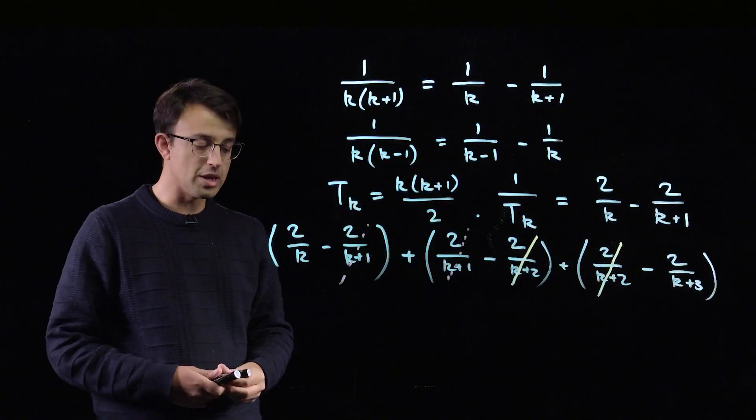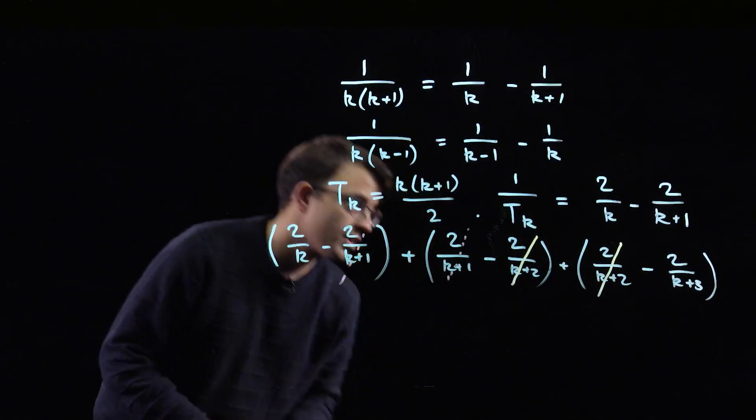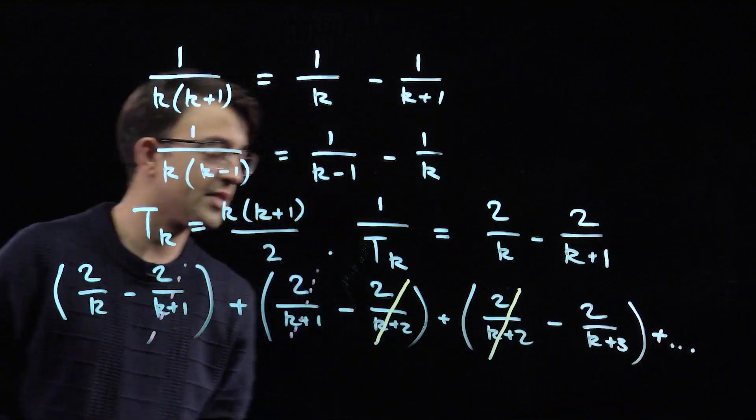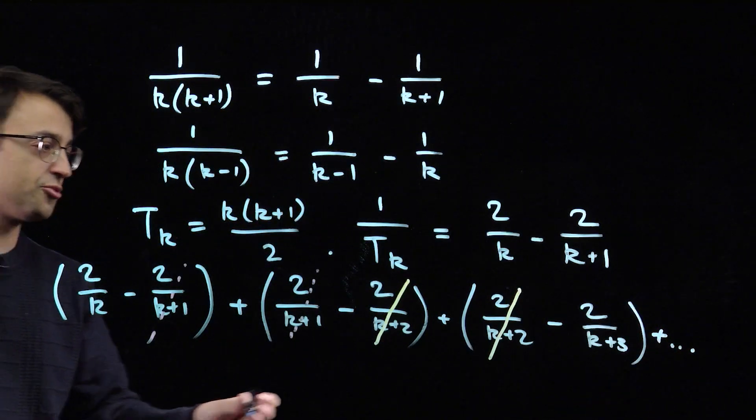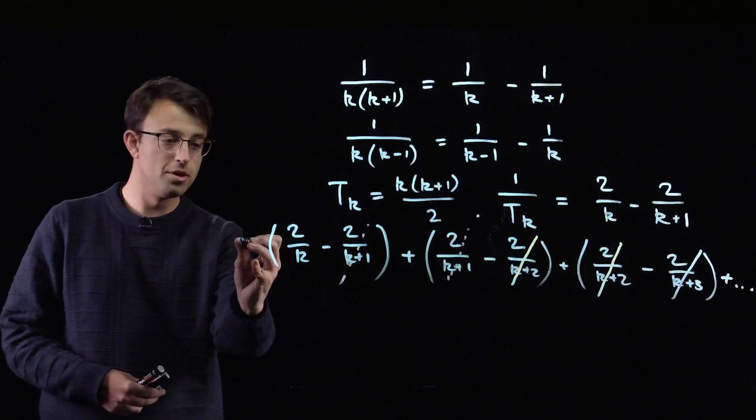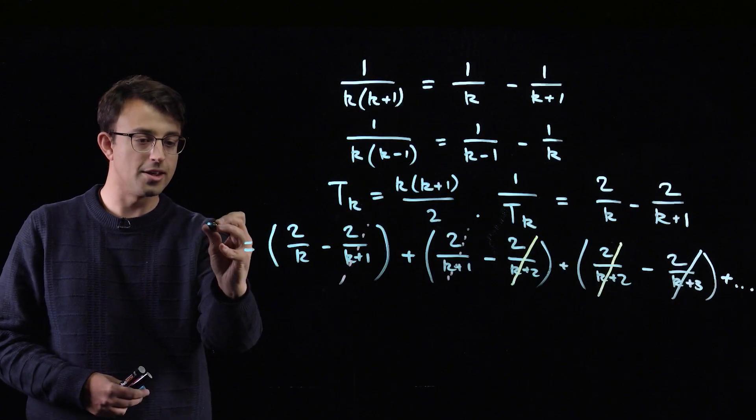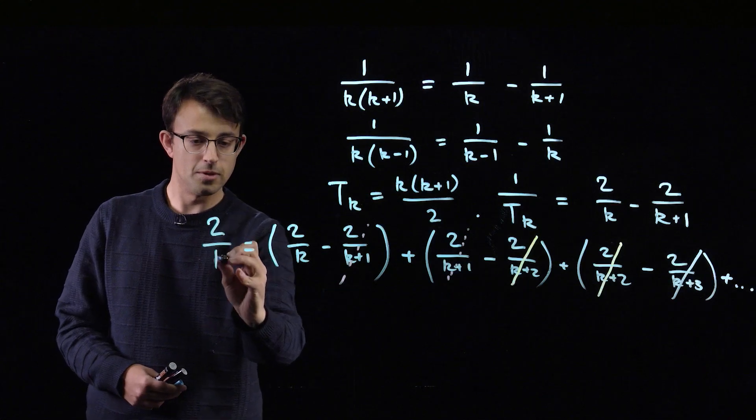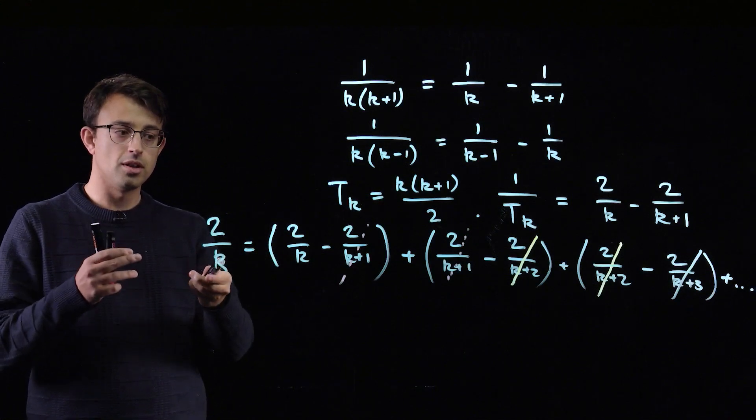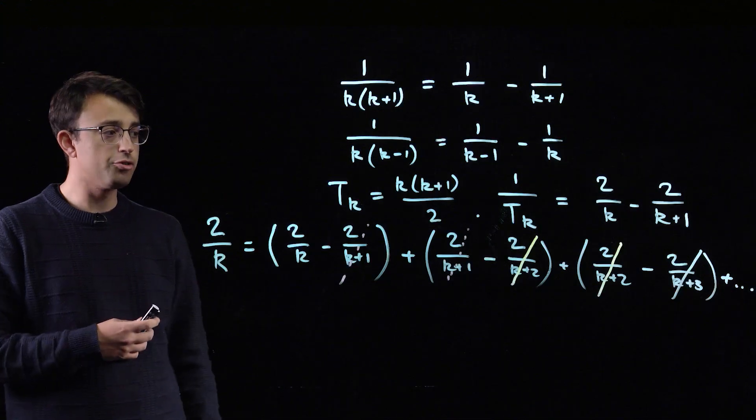So what happens if we keep doing this forever? We can keep adding up terms of this form. And every term is going to cancel eventually, leaving only the first term 2 over k. That's useful. That's very useful because we've got rid of a lot of terms.